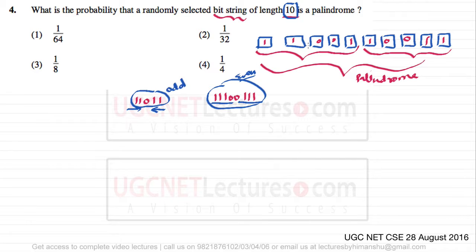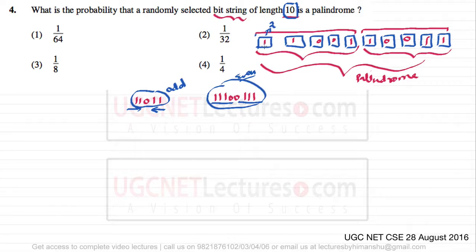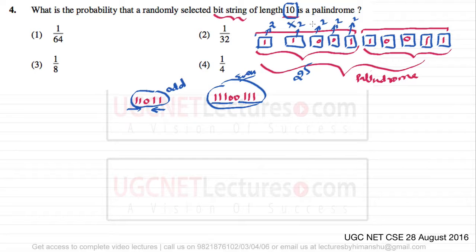If the string is a palindrome, the first five bits must be exactly equal to the last five (in reverse). For each of the five positions, a bit can take two values: zero or one. So there are two raised to the power five combinations for the first five bits, and those exact combinations determine the last five. Therefore, the number of palindromic strings of length 10 is 2^5.